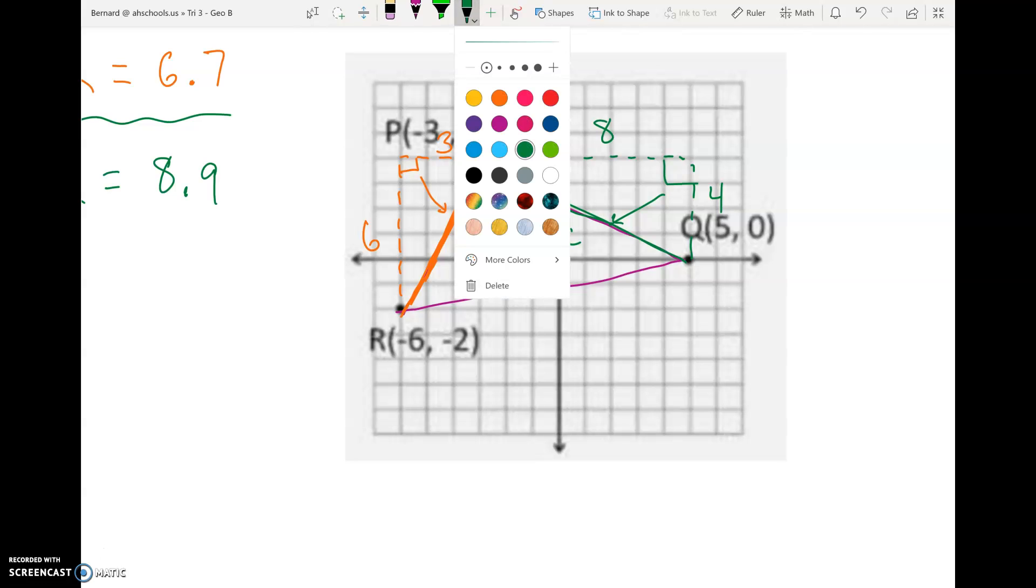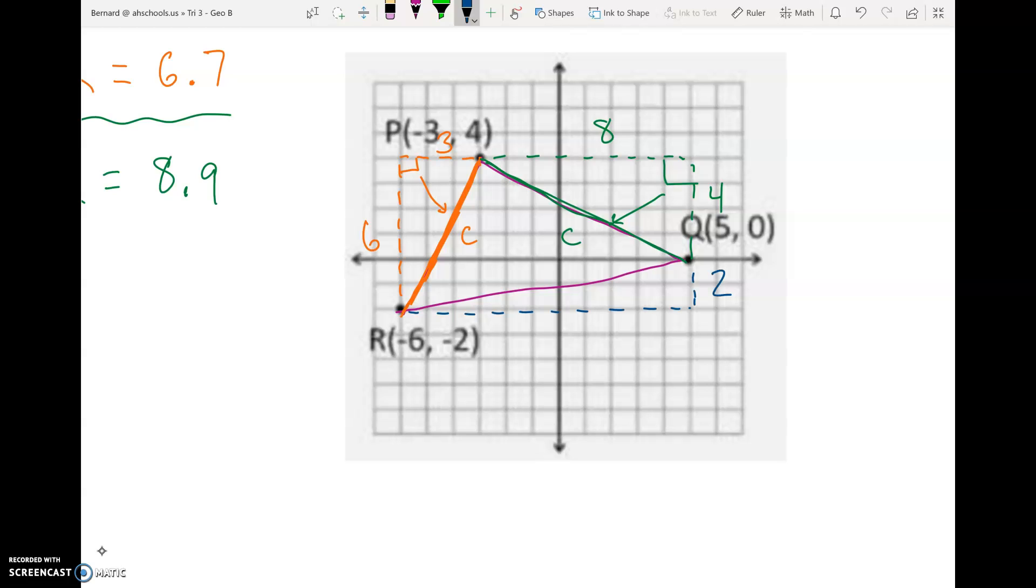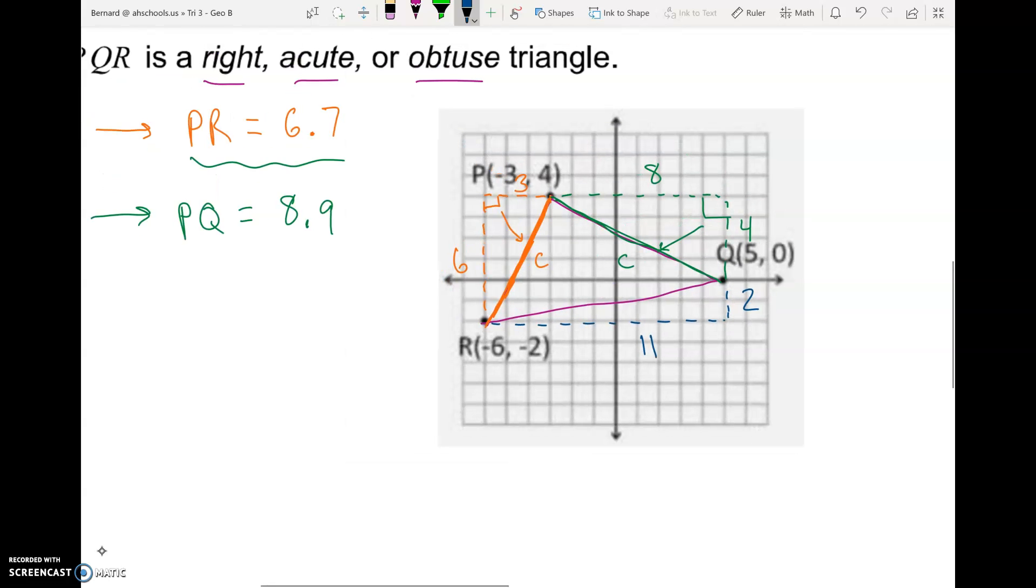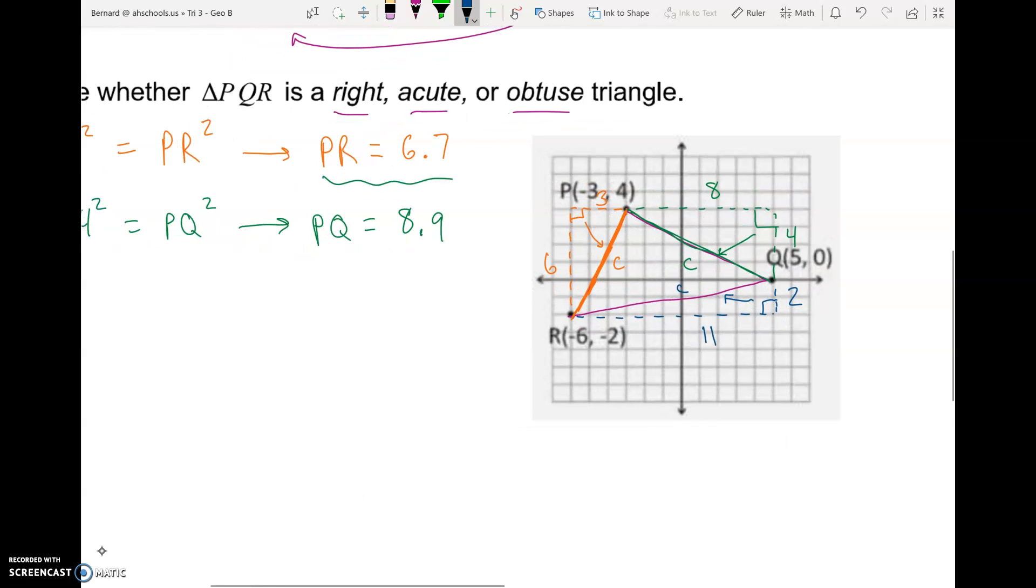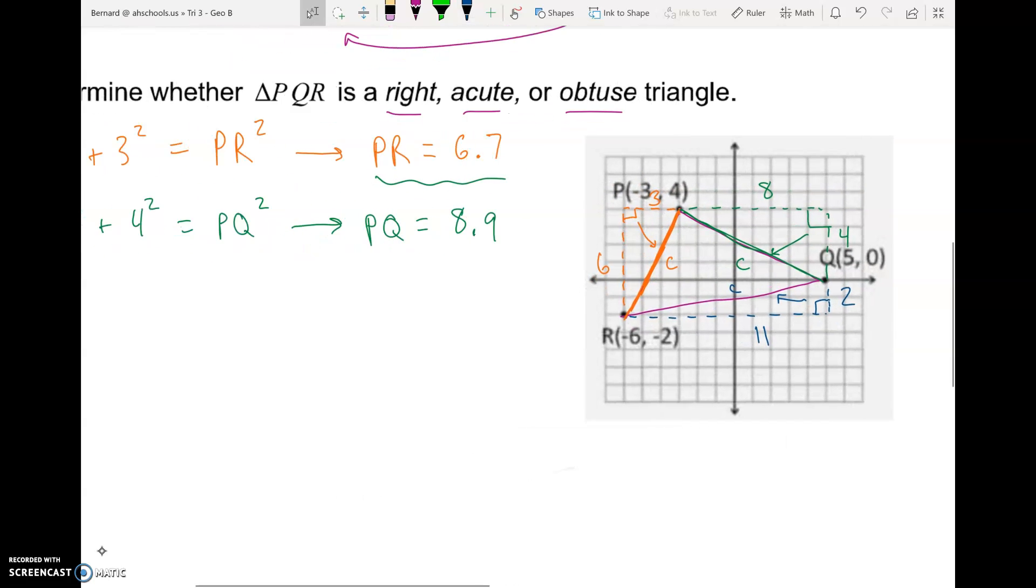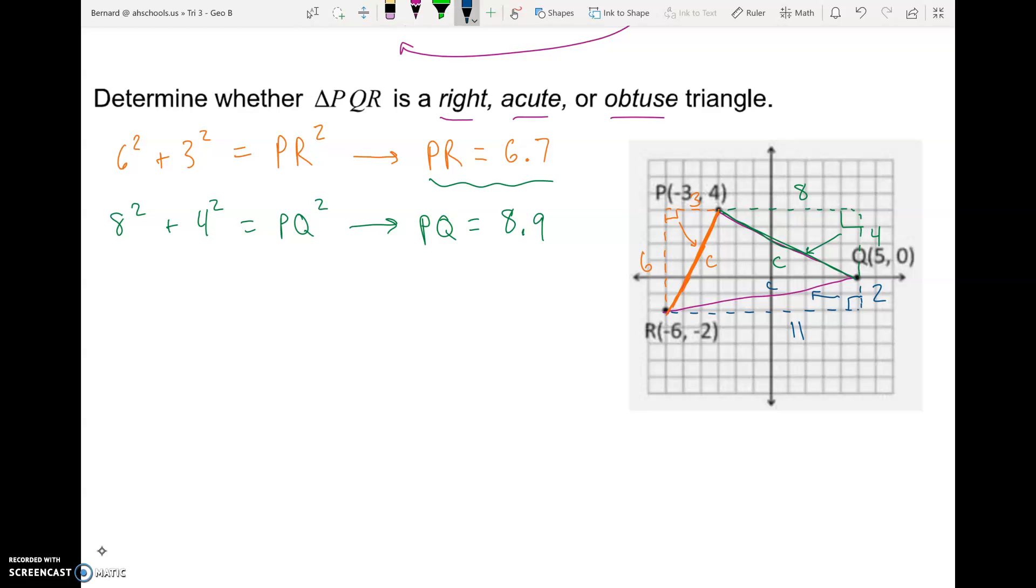Alright. And let's do the same thing down here for RQ. Make our dash triangle, right side is two, bottom side's kind of long, looks like 11 units. And so RQ is the C side. And so this time we'll use the two and 11, two squared plus 11 squared, that's going to equal our RQ squared. So squaring two, squaring 11, adding them together and square rooting them tells us that side RQ is going to be 11.2 units long.